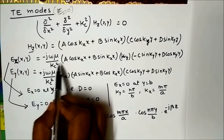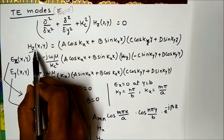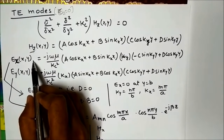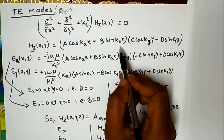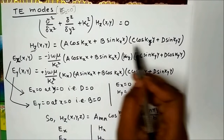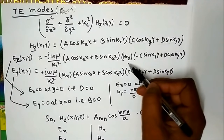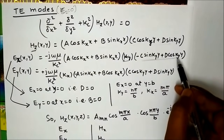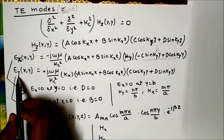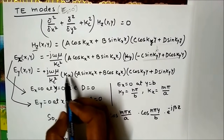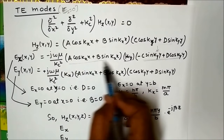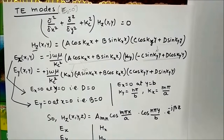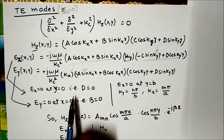Using the general solution, any transverse component can be written in terms of longitudinal components. With longitudinal component Hz, we write Ex and Ey in terms of Hz by taking derivatives. For Ex, we take the derivative of Hz with respect to y, giving a factor of Ky. For Ey, we take the derivative with respect to x, giving a factor of Kx. Then we apply boundary conditions.